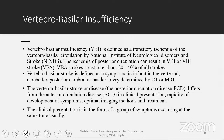VBI is defined as transitory ischemia of the vertebrobasilar circulation by the National Institute of Neurological Disorders and Stroke (NINDS). Ischemia of the posterior circulation can result in vertebrobasilar insufficiency or stroke. Strokes in this territory constitute about 20 to 40% of all strokes. Vertebrobasilar stroke is defined as a symptomatic infarct in the vertebral, cerebellar, posterior cerebral, or basilar artery as determined by CT or MRI. Posterior circulation disease differs from anterior circulation in clinical presentation, rapidity of symptom development, optimal imaging methods, and treatment. The characteristic feature is a group of symptoms occurring at the same time.